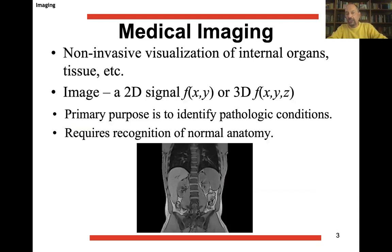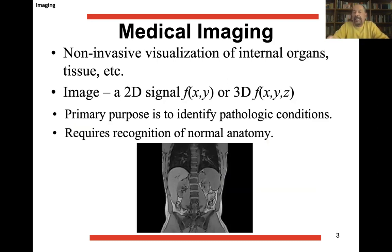The definition of medical imaging is non-invasive visualization of internal organs and tissues. The image is typically a 2D or 3D signal — more commonly 3D. Of course it is used to identify any kind of pathological conditions, but you need to clearly recognize the normal anatomy if you want to see any disease.